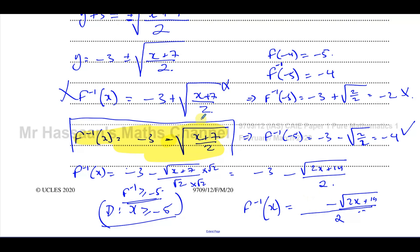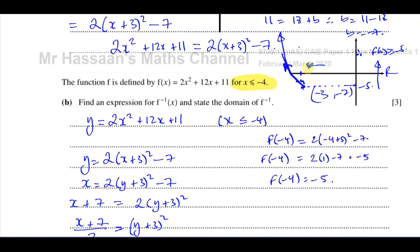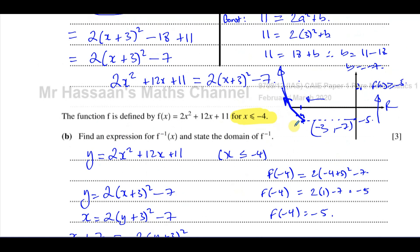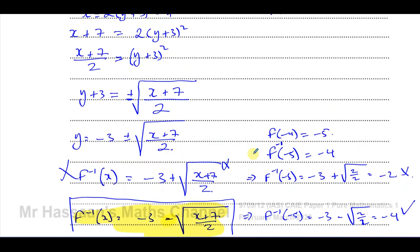So the inverse function is (minus 6 minus root(2x plus 14)) over 2, with domain x greater than or equal to negative 5. A key point: a one-to-one function is the only type that has an inverse. For a quadratic restricted to the left of its vertex, we choose the negative square root when finding the inverse.